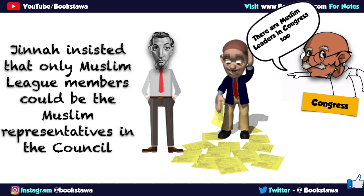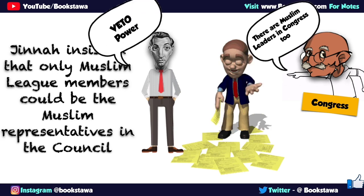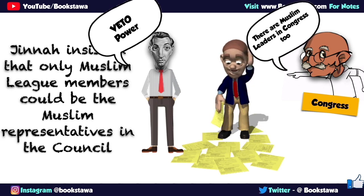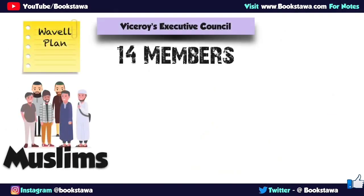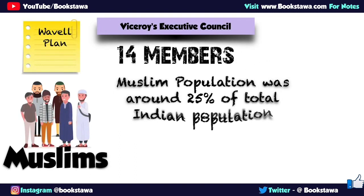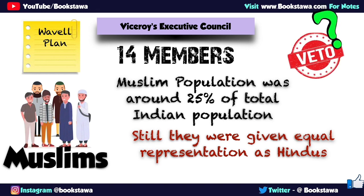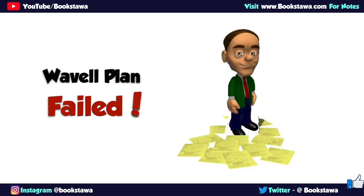And not only this, Jinnah also demanded veto power for the Muslim League — in case any constitutional provision was not in the interest of the Muslim community, the Muslim League could use its veto power to prevent it from being passed. But this demand was also completely unreasonable, because as discussed earlier, the Muslim population was only 25% in United India, yet they were being given seats equal to Hindus, so why would they need extra veto power? Because of all these problems, the Wavell Plan failed.